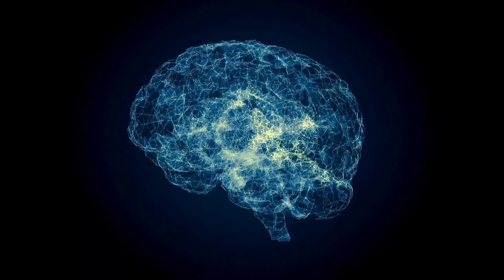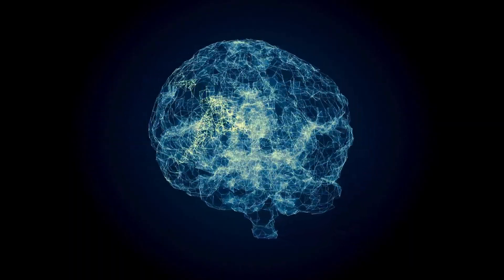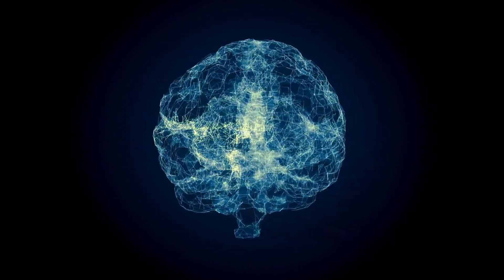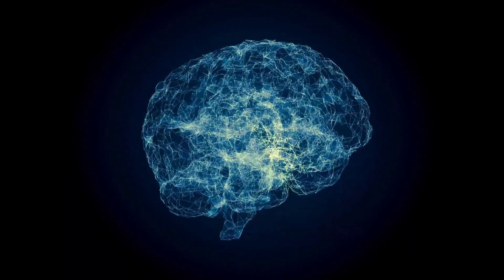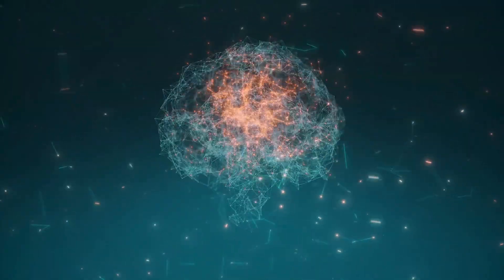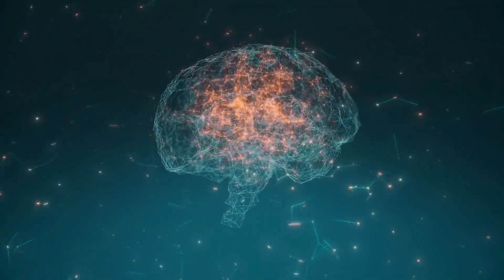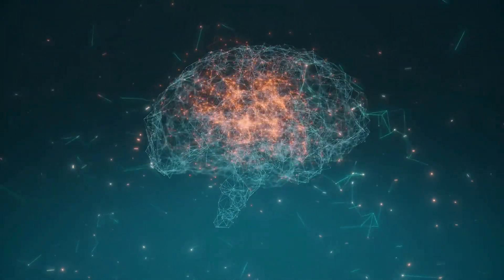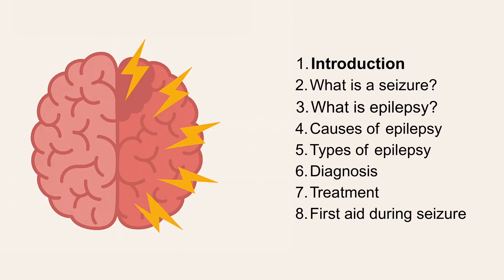Imagine your brain — an incredibly complex network of billions of neurons — suddenly begins firing all at once, out of sync and out of control. That's what happens during a seizure.